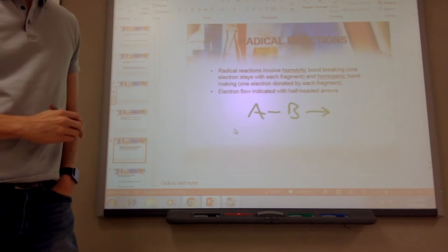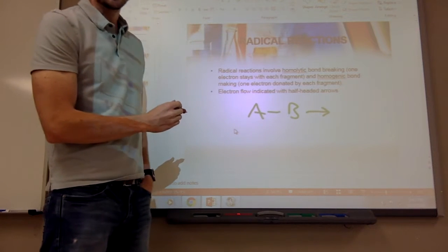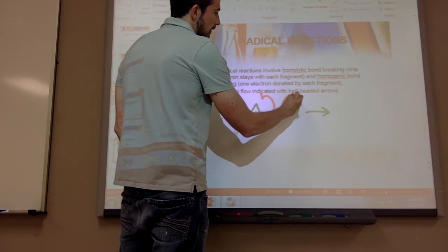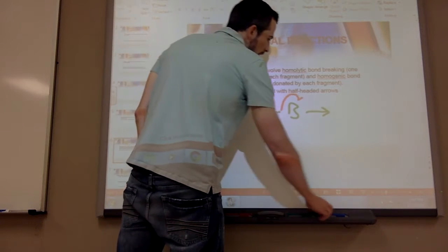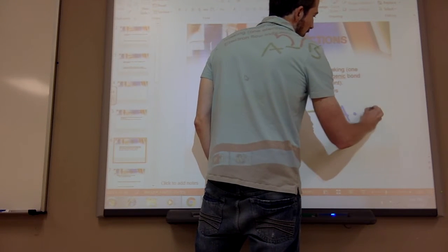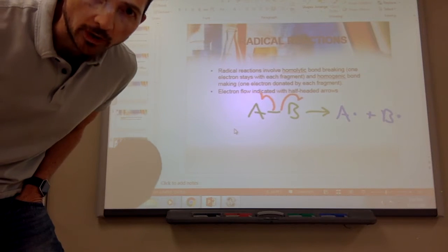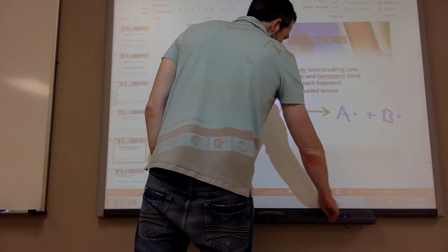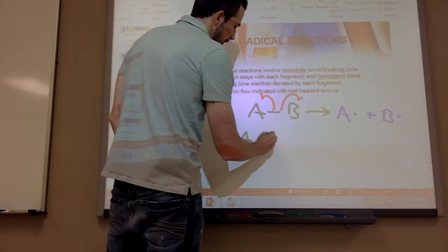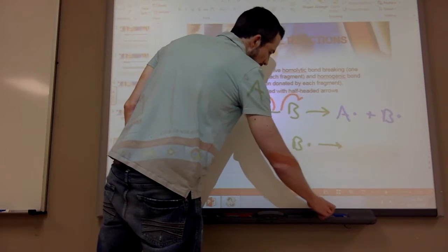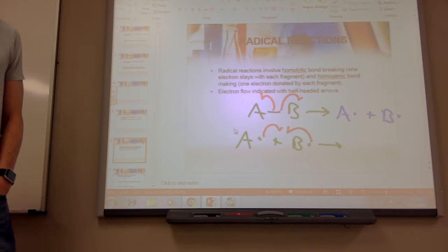If I'm showing homolytic bond breaking — remember the line represents two electrons — when that bond breaks, one electron goes to each fragment. The products would be radicals. A radical is when you have just one electron. To demonstrate homolytic bond making, you'd show this one electron combining with that one electron to form your chemical bond.